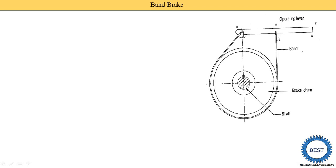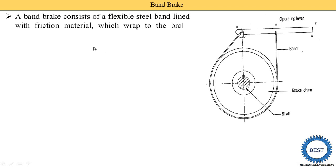This is the operating lever. A band brake consists of a flexible steel band lined with friction material which wraps around a brake drum. This steel band is wrapped on the brake drum and is lined with a friction material.